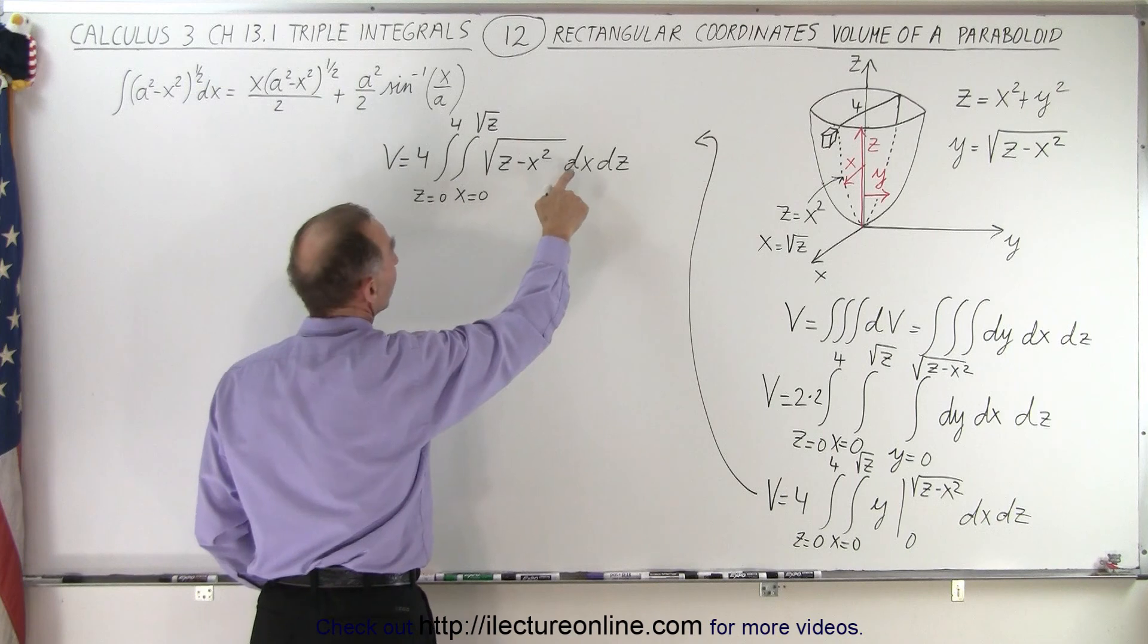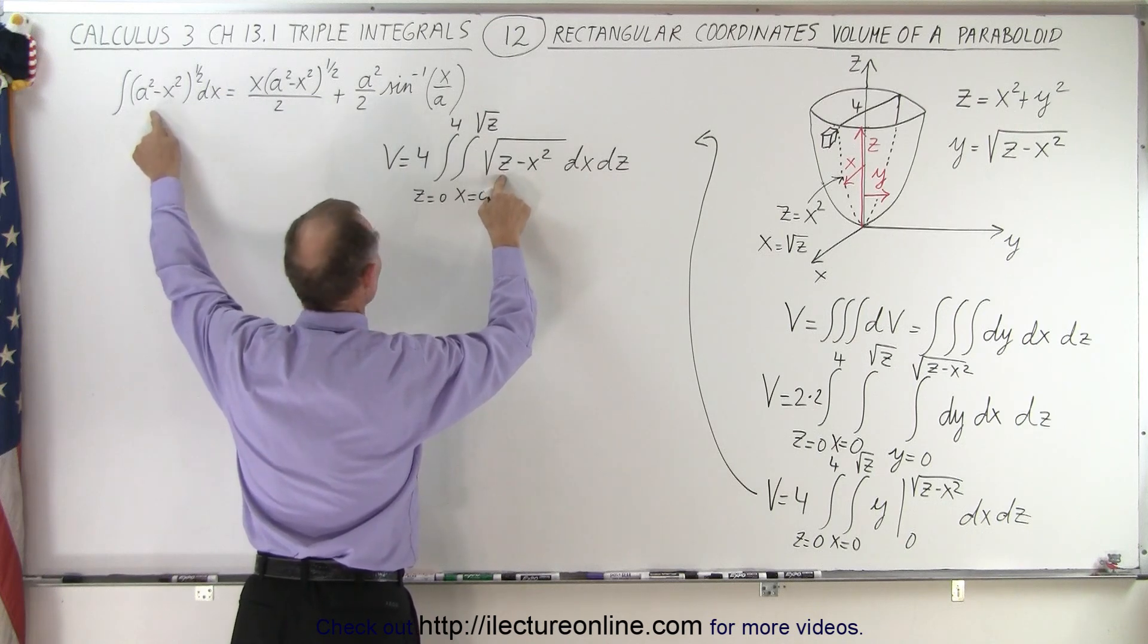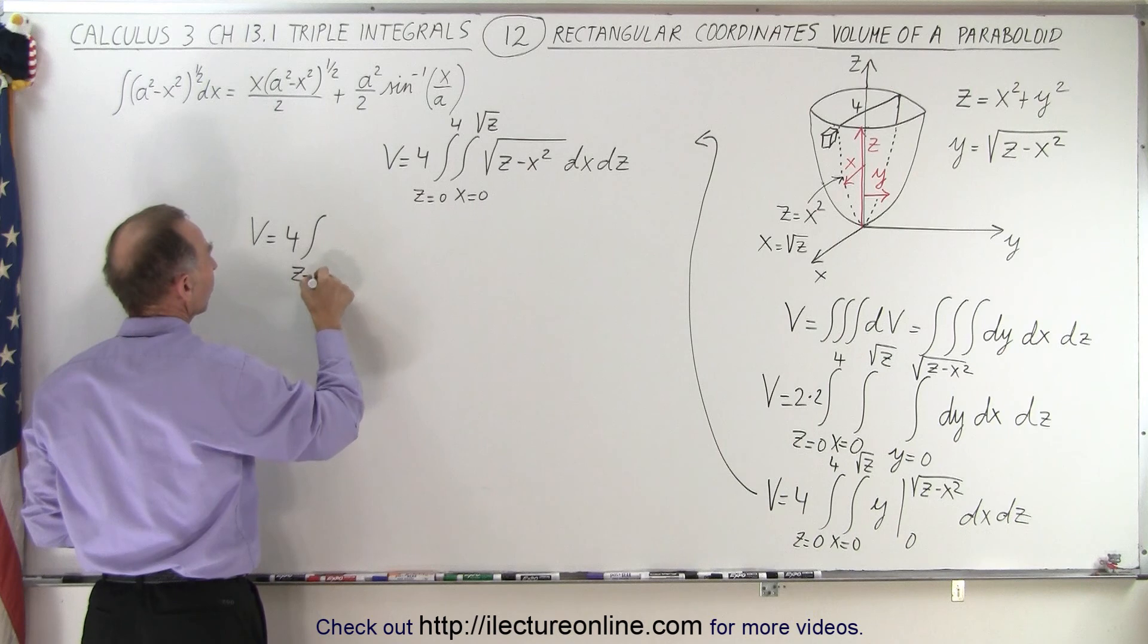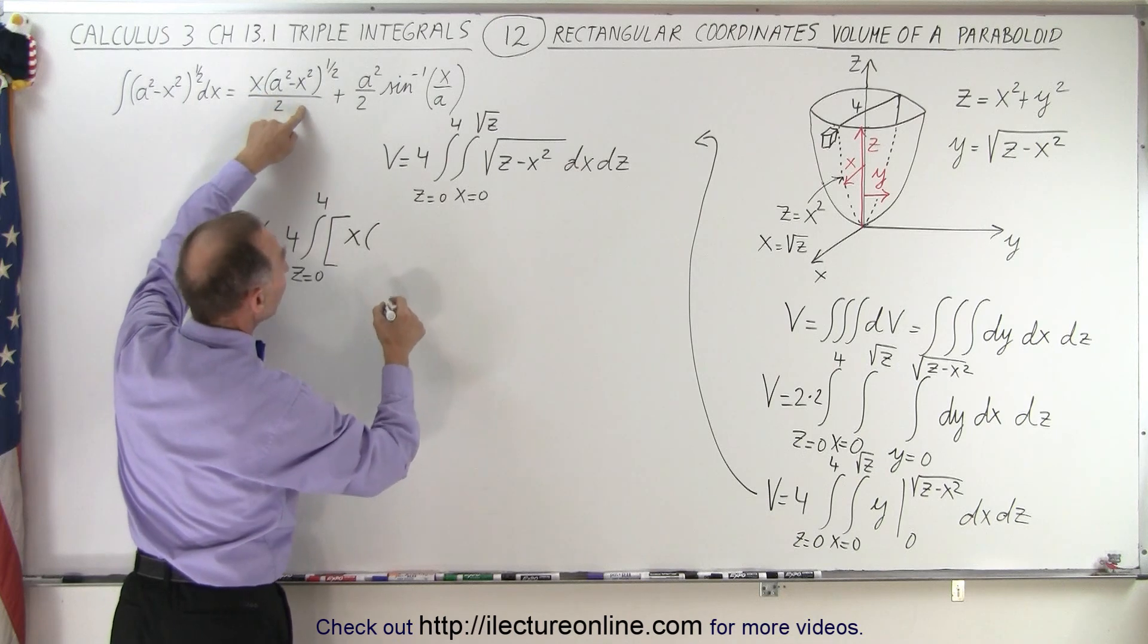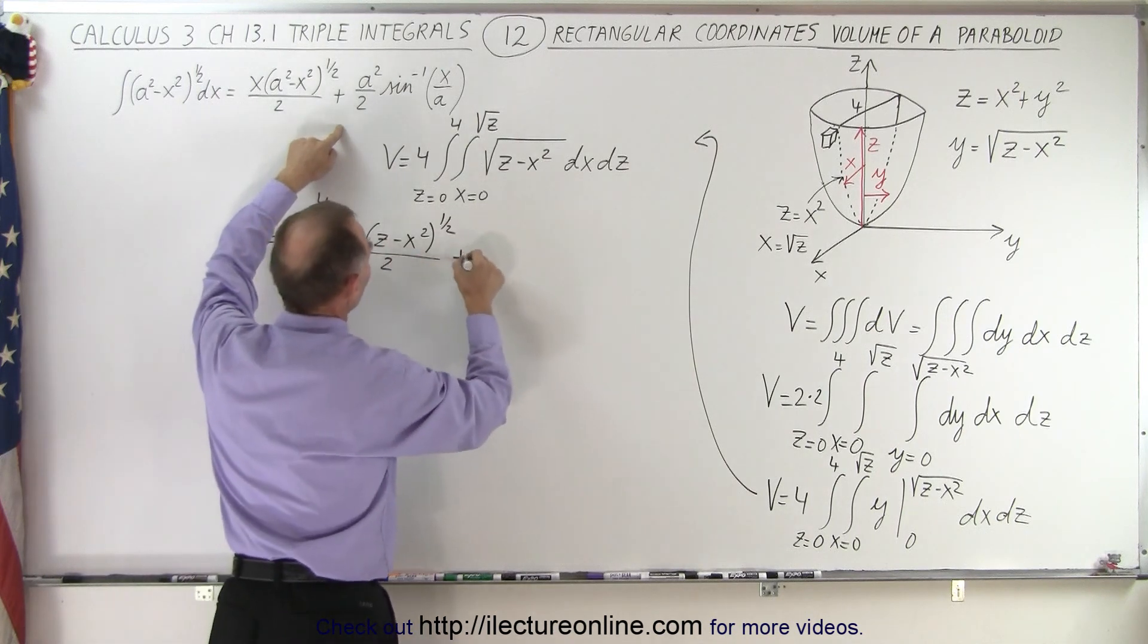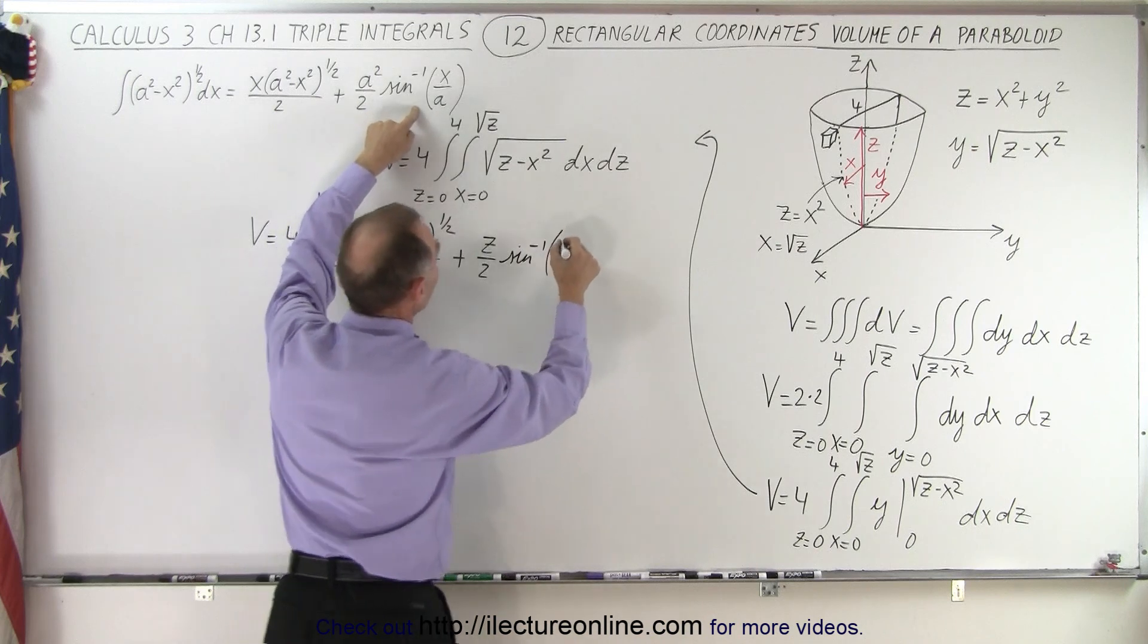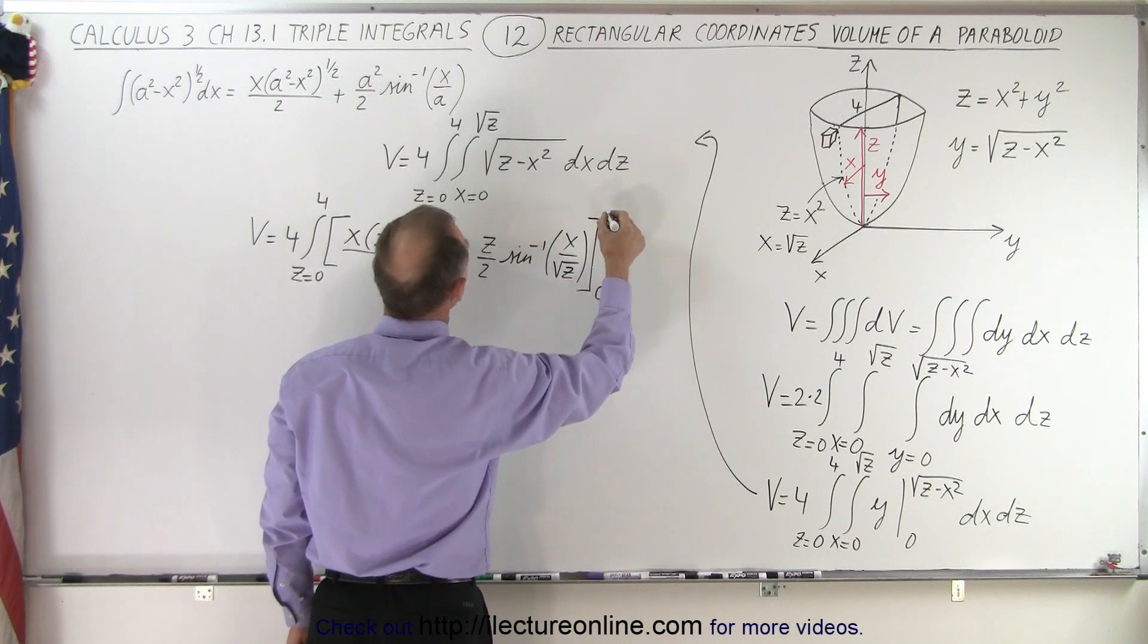So now if we integrate the next integral it's going to be over x, that means z is a constant. So we have something that looks like this where z is actually a squared. So we can go ahead and plug that in, so we have volume is equal to 4 times the one integral left z equals 0 to 4, and here we end up with x times a squared minus x, or in this case it'll be z minus x squared to the one-half power divided by 2, and then plus a squared is z divided by 2 times the inverse sine of x over a which is the square root of z evaluated from 0 to the square root of z.